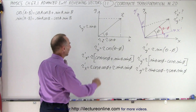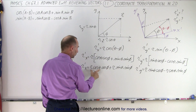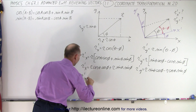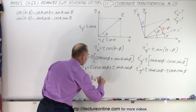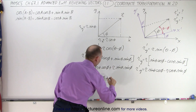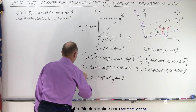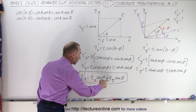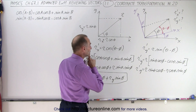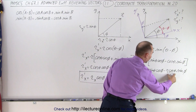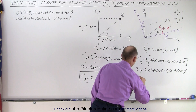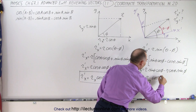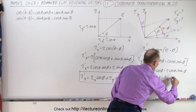Notice that the X component of R is R cosine theta, so this can be replaced by R sub X, and this can be replaced by R sub Y. So R prime of X is equal to R sub X times cosine of phi, plus R sub Y times sine of phi. Notice that R sine theta equals R_Y and R cosine theta equals R_X, so R prime of Y is equal to R_Y times cosine of phi, minus R_X times sine of phi.